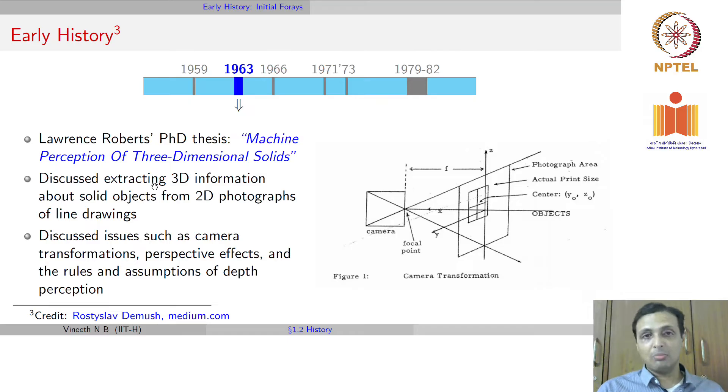Interestingly, Lawrence Roberts moved on from this topic and he is actually more famous for some other big development that all of us owe him for. I am going to leave that as a trivia quiz for you to find out. We will talk about it next class. Try to find out what Lawrence Roberts is known for - the hint is it's not for anything in computer vision, but it's a huge technological development that all of us today owe him for.